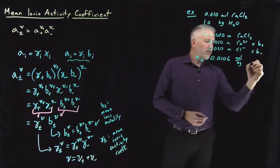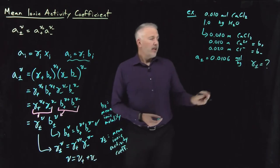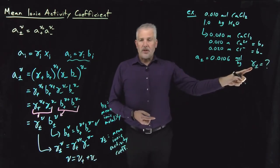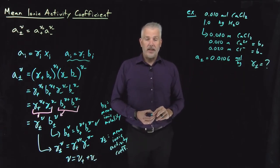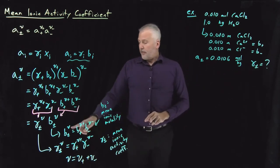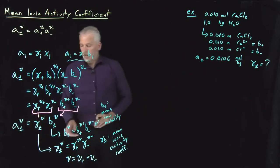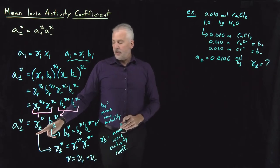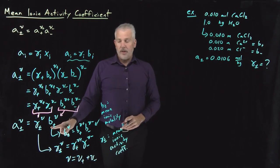The question is: how ideal or not ideal is that solution? That's best answered by talking about the activity coefficient. If the activity coefficient is near one, the solution is very ideal; if it's far from one, it's very non-ideal. So we answer this question by solving for the value of the mean ionic activity coefficient. We have the mean ionic activity; we can calculate the mean ionic molality and use that to compute the mean ionic activity coefficient.